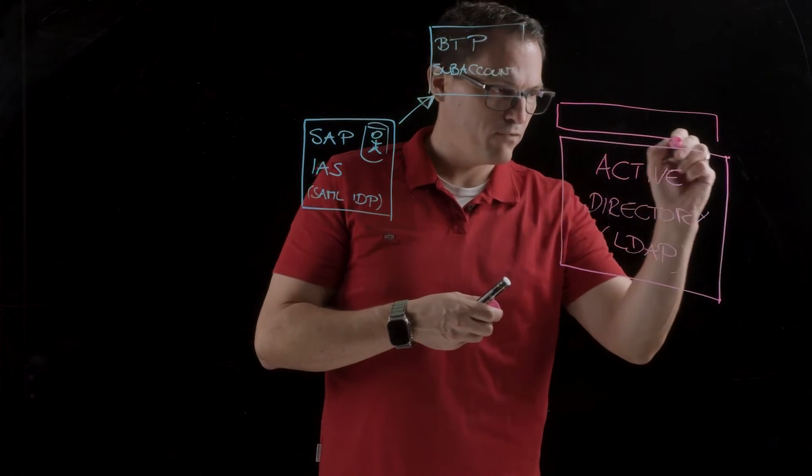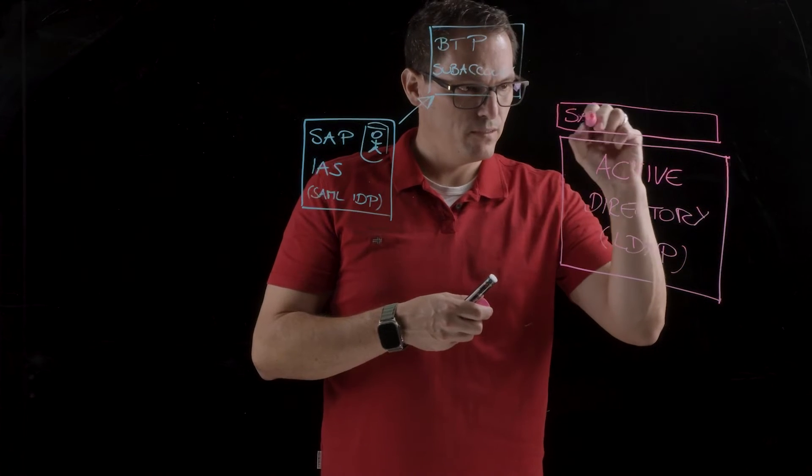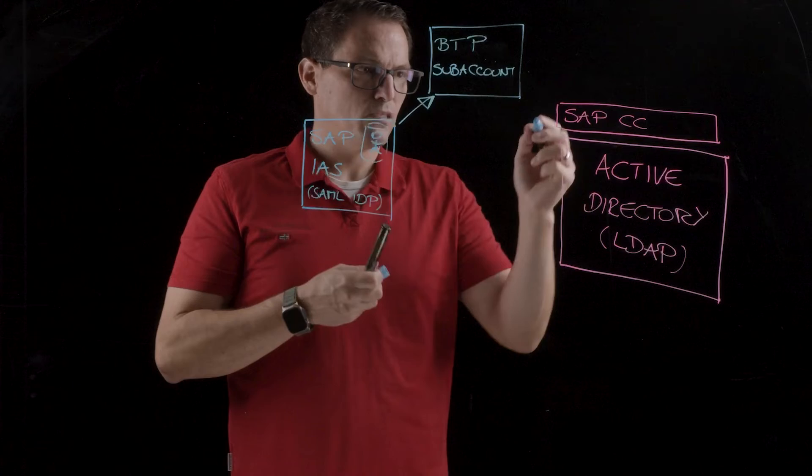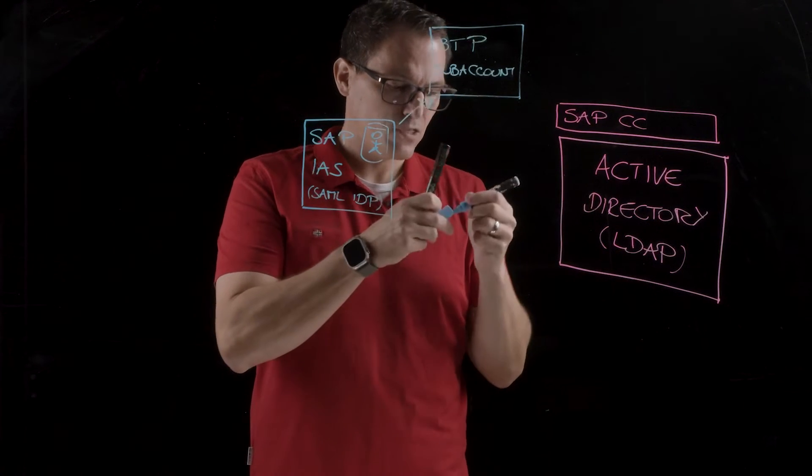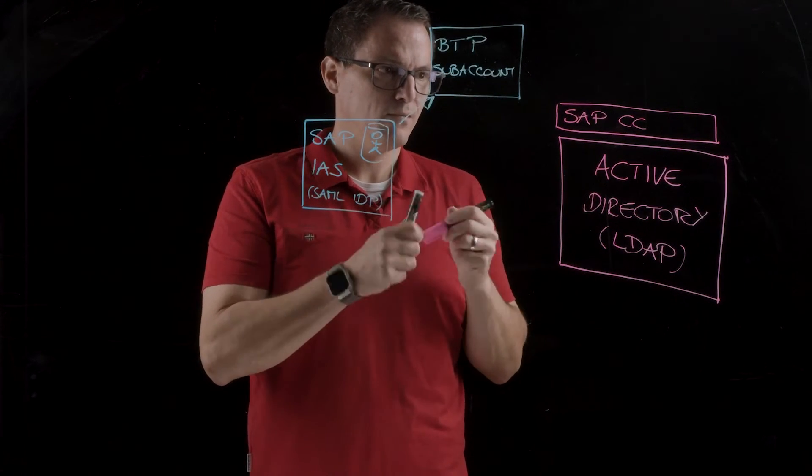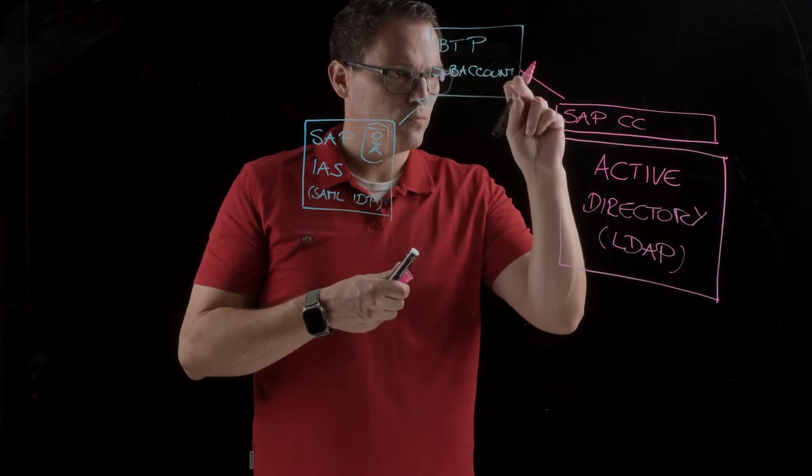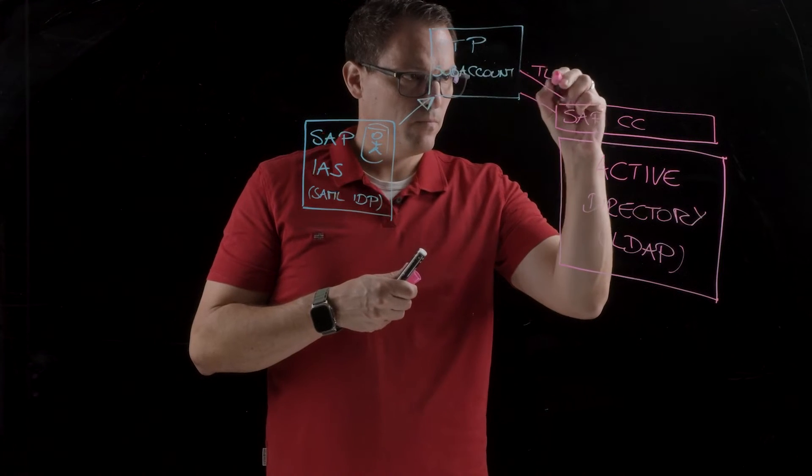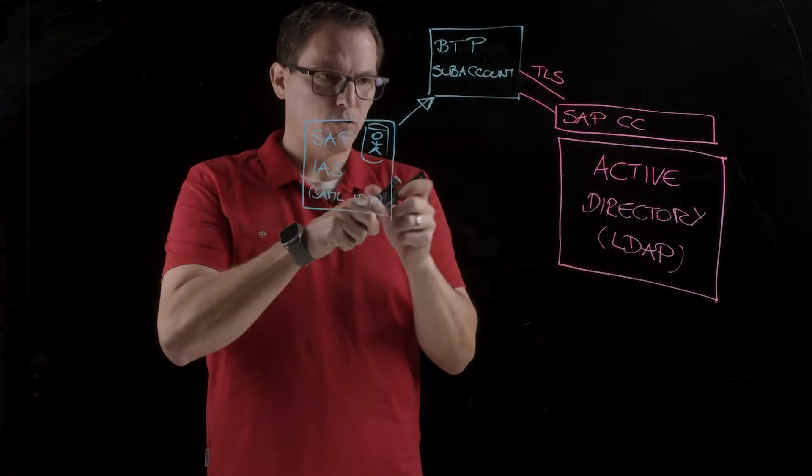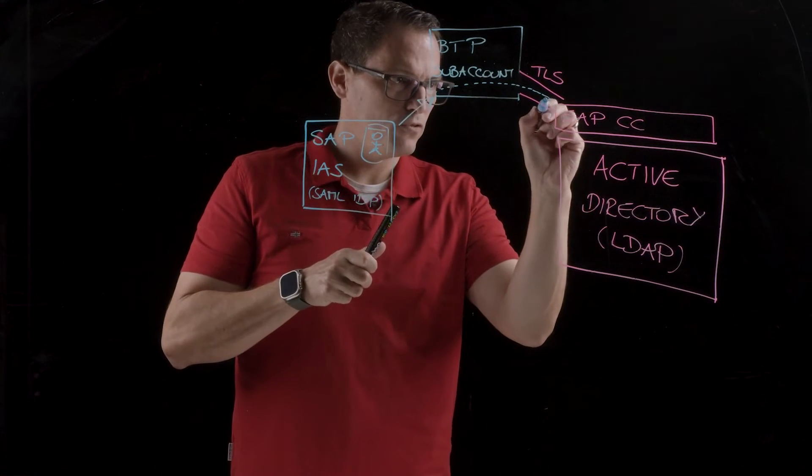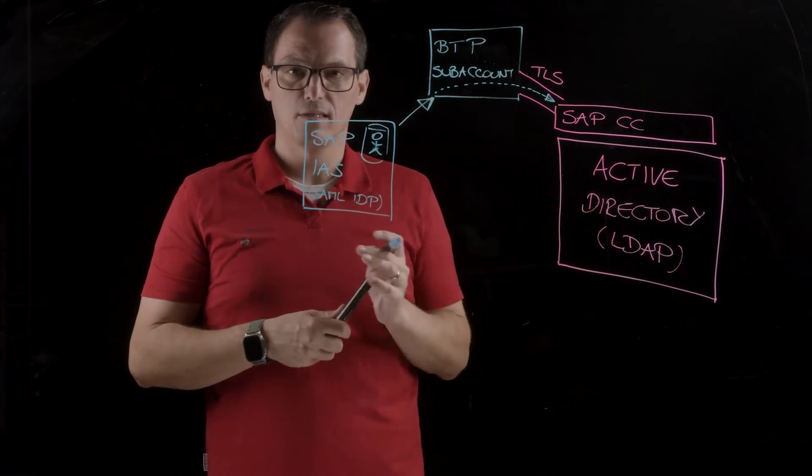So here we also have the SAP cloud connector that is used then, or that's opening a TLS tunnel. So the cloud connector opens a tunnel here. So we have this TLS tunnel that is opened here. And the connection is then going via the SAP Account to this TLS tunnel and authenticating the users.